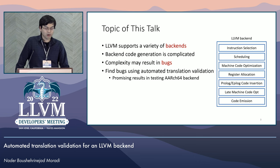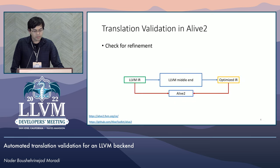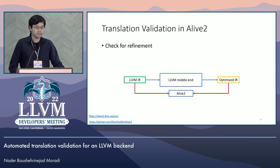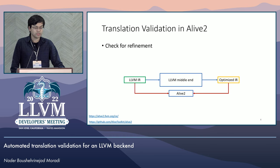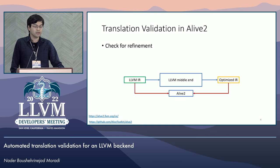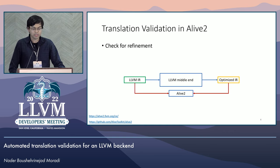Our tool is called ARM TV and is based on Alive 2. Now I'm briefly going to talk about Alive 2 and introduce some of the related concepts. In Alive 2, for a source IR function and its optimized version, unlike FileCheck which uses developer-specified patterns as its test oracle, Alive 2 checks for refinement between the source and the target IRs. For a pair of functions, the refinement relation is satisfied when for every possible input state, the target function displays a subset of the behaviors of the source function.